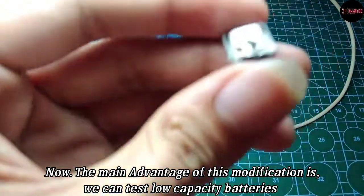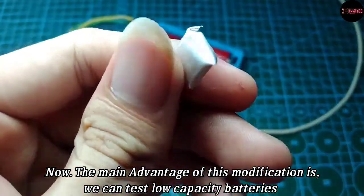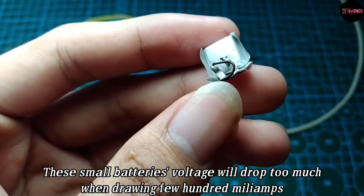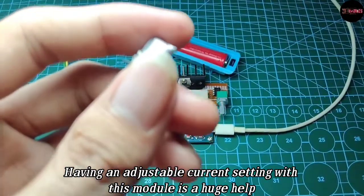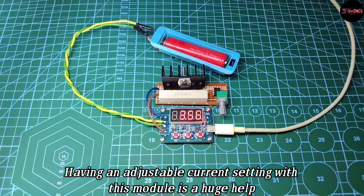Now the main advantage of this modification is we can test small batteries like this, because these batteries are not designed to discharge a lot of current.